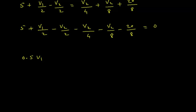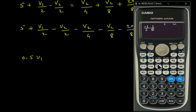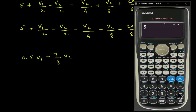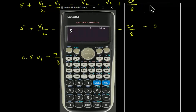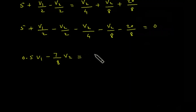This gives: 0.5·V1, and combining the V2 coefficients: minus 1/2 minus 1/4 minus 1/8 equals minus 7/8. So: 0.5·V1 minus (7/8)·V2 minus 20/8 = minus 5/2. This is equation number 2.